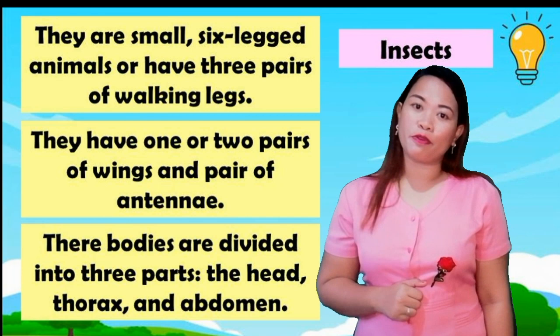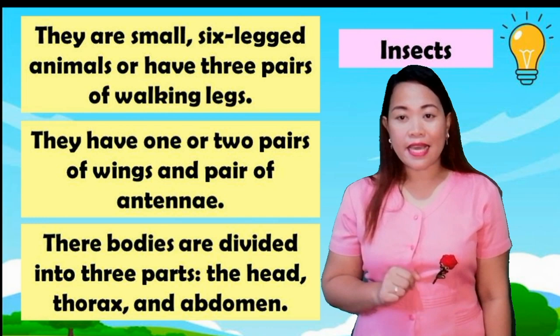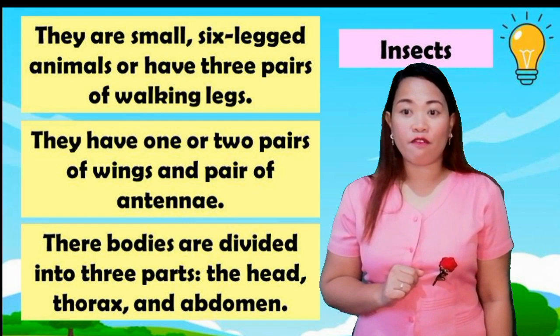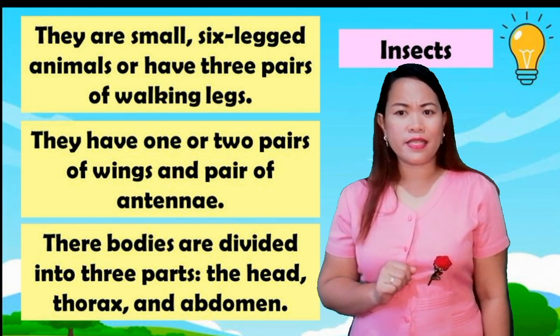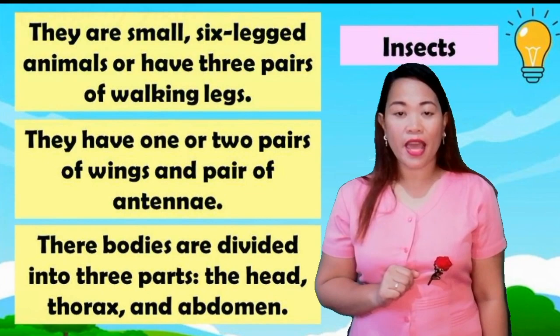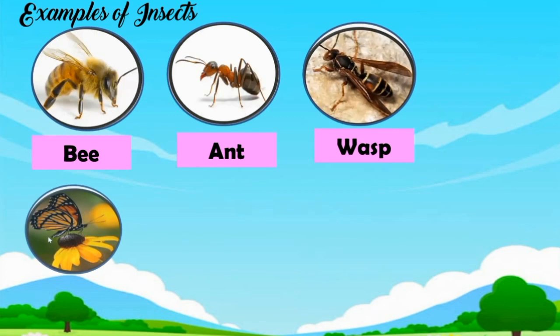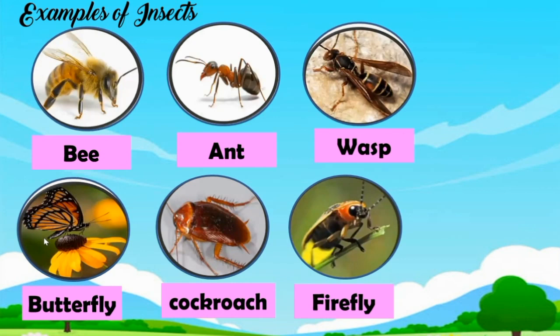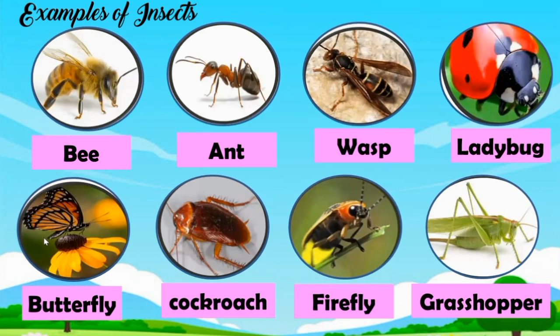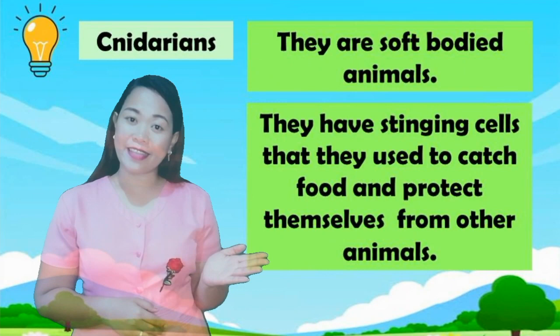Another subgroup of invertebrates are insects. They are small, six-legged animals, or have three pairs of walking legs. They have one or two pairs of wings and a pair of antennae. Their bodies are divided into three parts: the head, the thorax, and the abdomen. Examples of insects: bee, ant, wasp, butterfly, cockroach, firefly, ladybug, grasshopper.